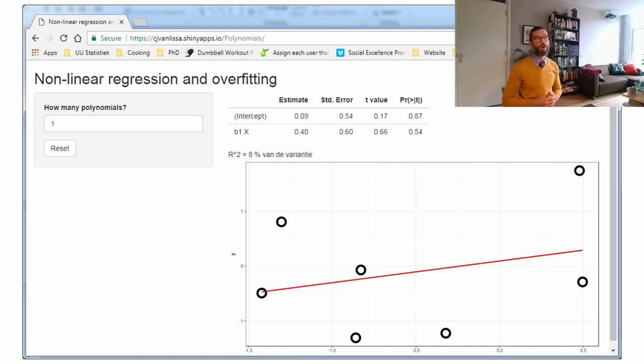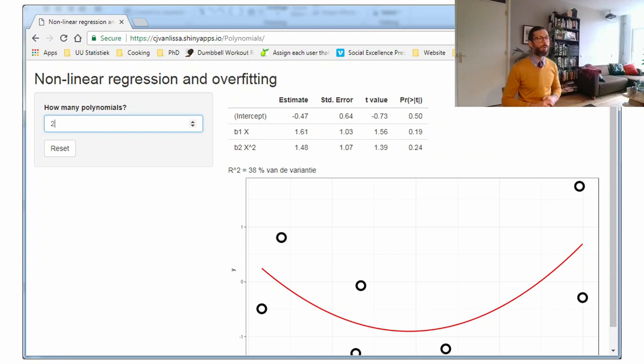If I add the first-order polynomial, or the linear effect of x on y, we see that we explain a non-zero amount of variance. This is linear regression. But we can keep adding polynomials. For example, here is the second-order polynomial, and we now already explain 38% of the variance. And a very interesting thing happens when I add up to the seventh-order polynomial.